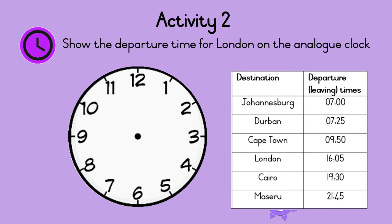Show the departure time for London on the analog clock. The departure time for London is 5 minutes past 4 in the afternoon. So, the minute hand should point to 1 — this shows 5 minutes past. And the hour hand should point to just after 4. Great!